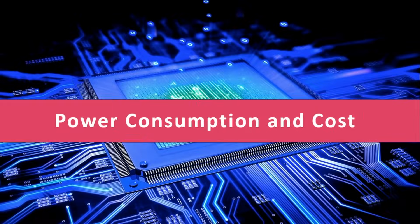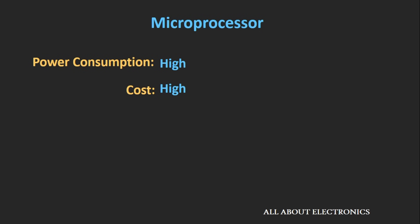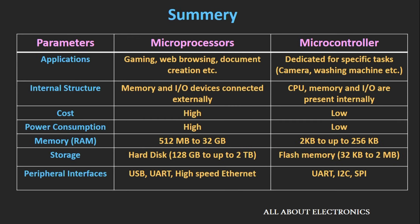Now let's see the difference in terms of power consumption and cost. In the case of a microprocessor, since all memory elements and IO ports are connected externally, the overall cost of the system as well as power consumption is higher compared to microcontrollers. This is a summary of the differences between the microprocessor and microcontroller based on the various parameters we have discussed.